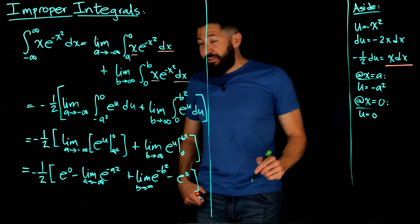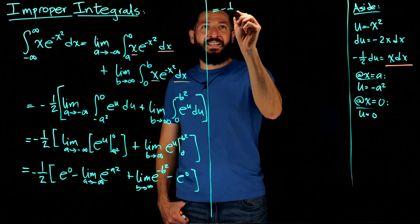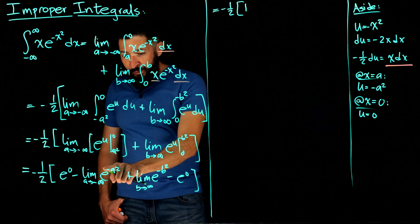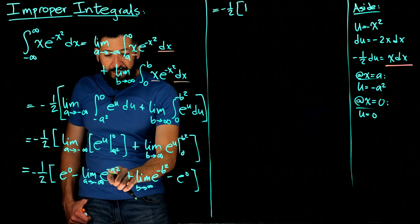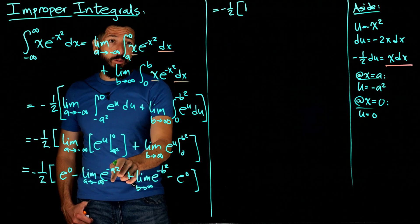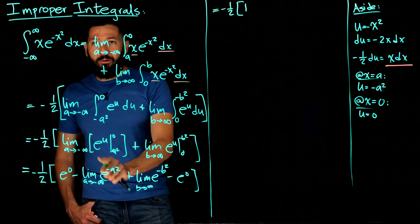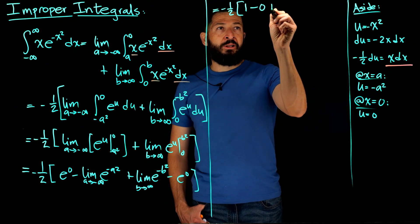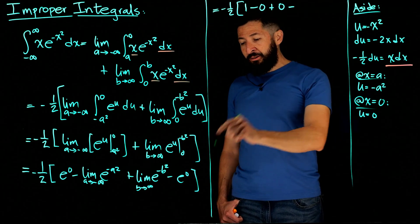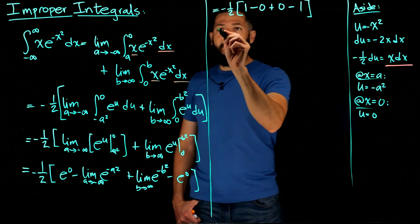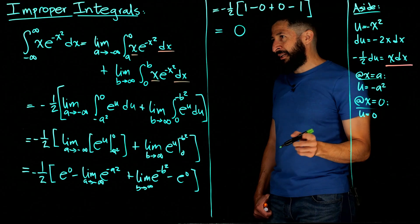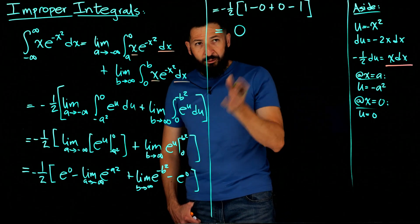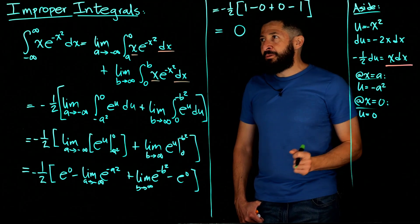E to the zero is 1. For the limit as A goes to negative infinity of e to negative A squared: that's one over e to A squared, and since A squared goes to positive infinity, this limit is zero. The same for the limit of e to negative B squared as B goes to infinity — also zero. So we get negative one-half times one minus zero plus zero minus one, which equals zero. The integral converges to zero, which makes sense because the graph of x times e to the negative x squared is symmetric about the y-axis.